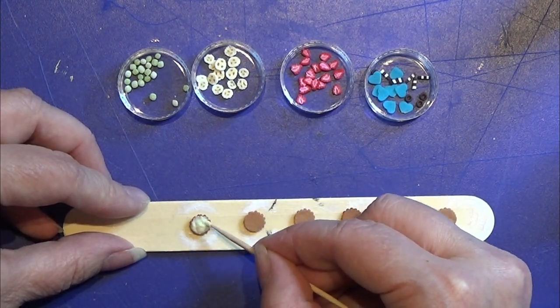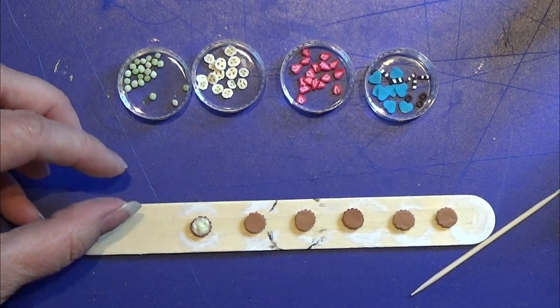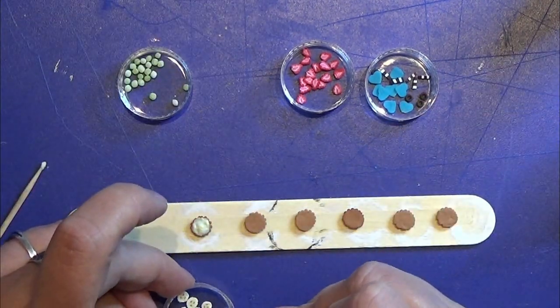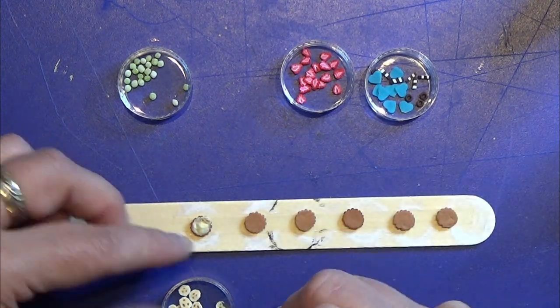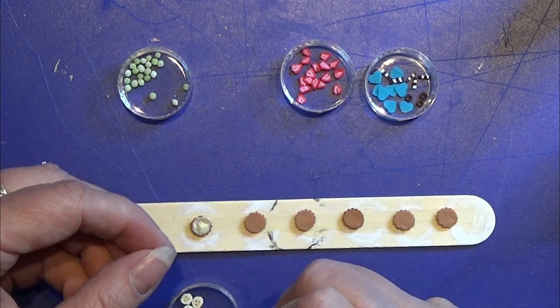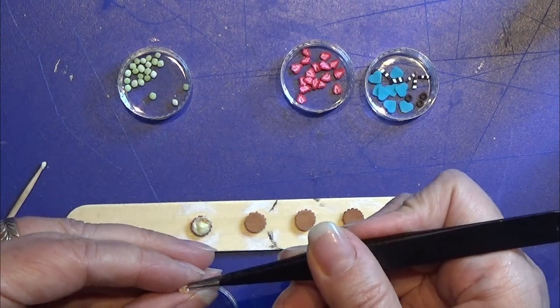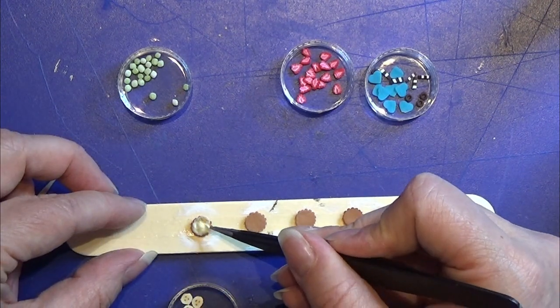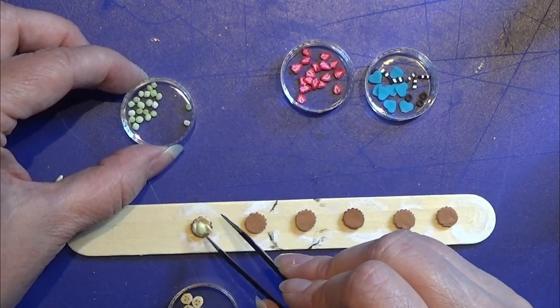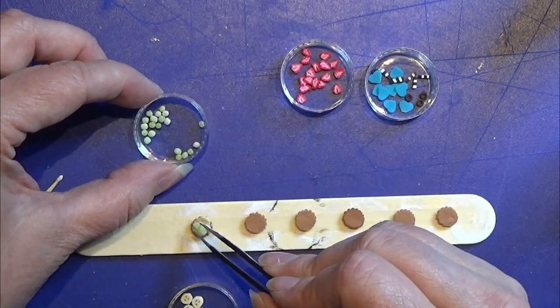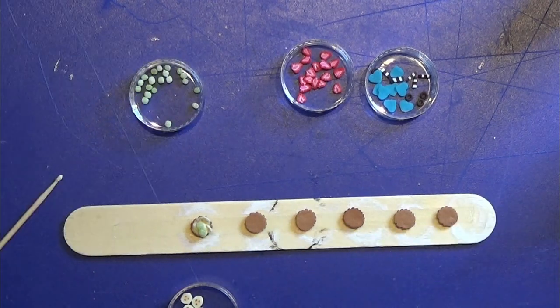If you don't have this you can use a Fimo liquid icing. That is Fimo liquid with a little color of clay in there mixed into an icing like texture and you just put that on with the fruits and then you bake it all again. But with this you don't need to bake it again.